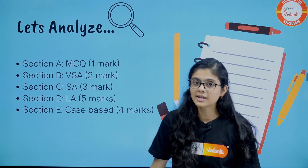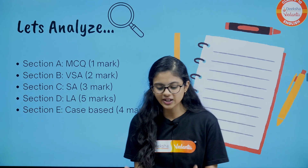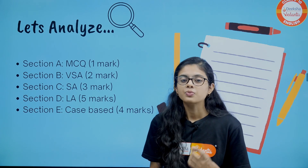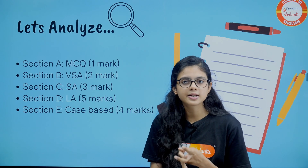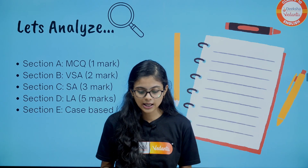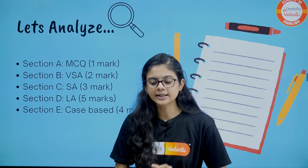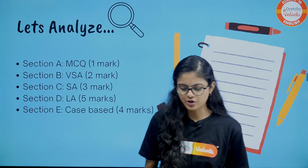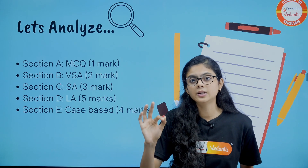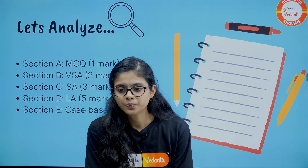Coming towards Section E — case-based question of four marks. From where can we get the Section E question? It may be from electricity: cost calculation, heat (Joule's law), resistance combination — series, parallel and all. Or else it may be from the light chapter as well, with formulas and refractive index concept, which is also very important.